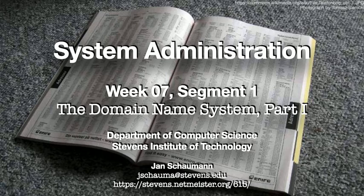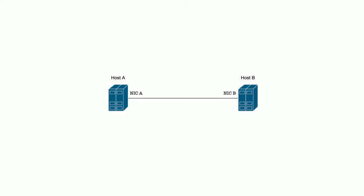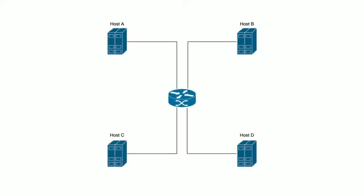But we're getting ahead of ourselves. To better understand the DNS, let's rewind and go back to the early days of the Internet. If you have only two hosts that you're connecting, then all you really need is a network interface card in each, hook them up with a cable, and there you go. You know how to reach the other system without any need for looking up addresses or anything. But of course, as soon as you add just a few other systems, you have a problem.